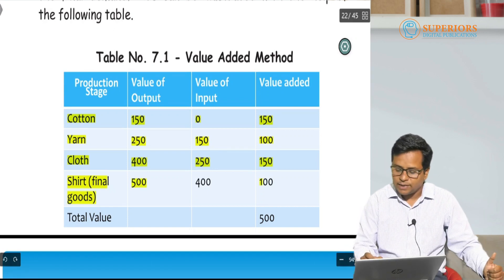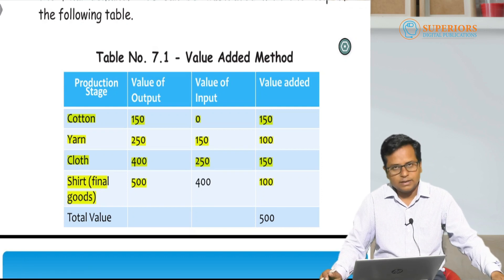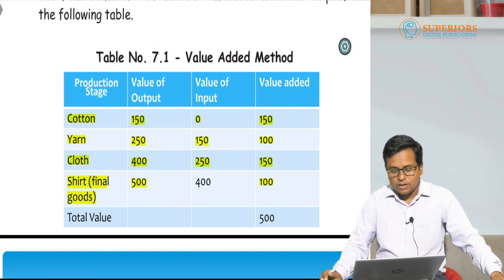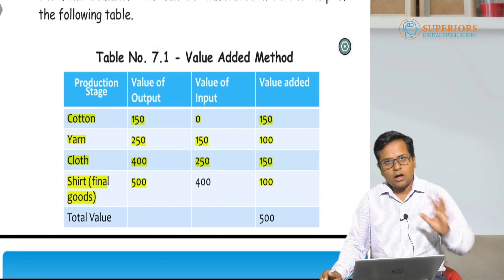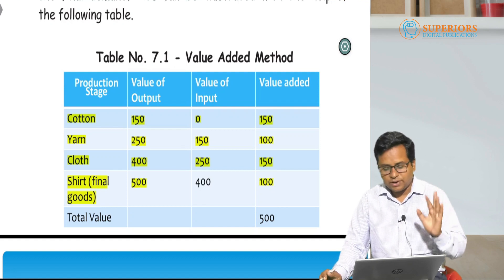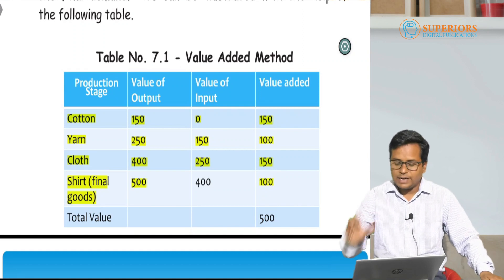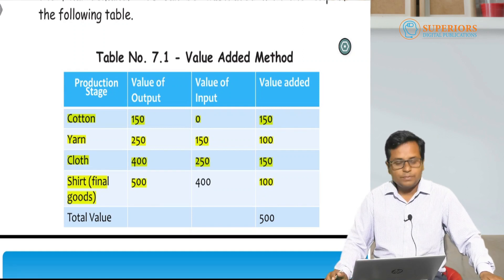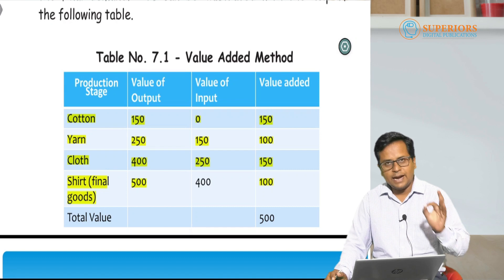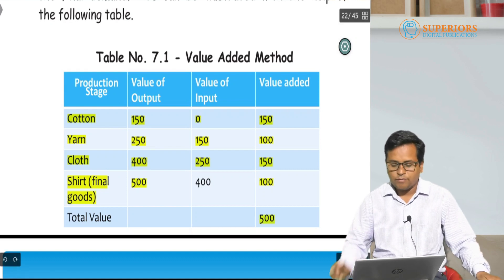Then the cloth is converted into the shirt and its value becomes rupees 500. The value added at this last stage of production is rupees 100. So either we take into account the value of the shirt — the final product — which is rupees 500, or we take the sum of value added at each stage of production, which also equals rupees 500.